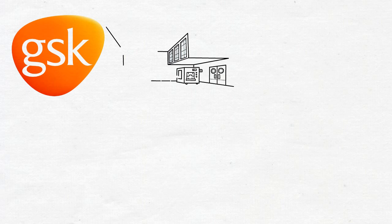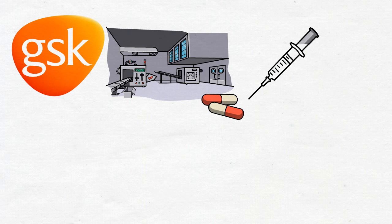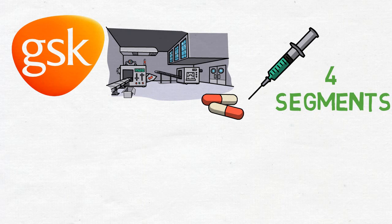GlaxoSmithKline PLC engages in the development, manufacture and marketing of pharmaceutical products, vaccines, over-the-counter medicines and health-related consumer products in the United Kingdom and internationally. It operates through four segments: pharmaceuticals, pharmaceuticals R&D, vaccines and consumer healthcare.